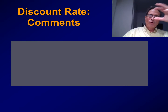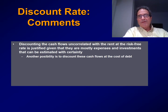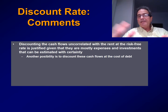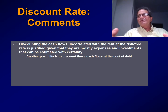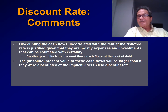Some concluding comments on our previous proposal. Discounting the cash flows uncorrelated with the rent — meaning expenses and CAPEX — at the risk-free rate is justified given that they are mostly expenses and investments that can be estimated with certainty. Another possibility is to discount these cash flows at the cost of debt, if we assume the risk is not precisely the risk-free rate. The absolute present value of these cash flows will be larger than if they were discounted at the implicit gross yield discount rate — because we are discounting at a lower rate.